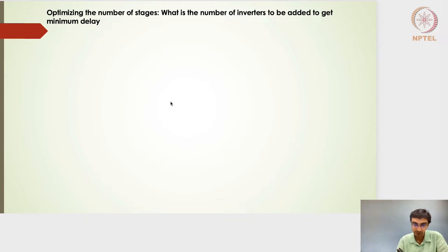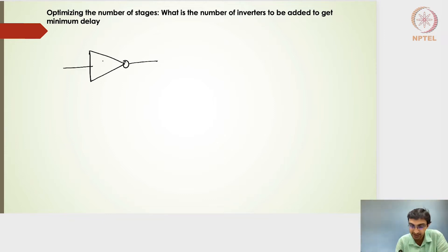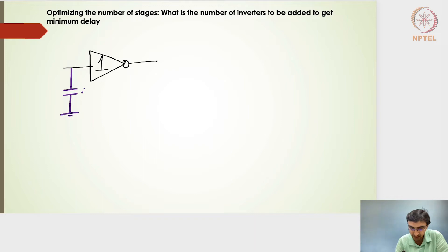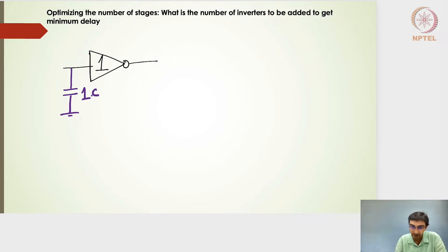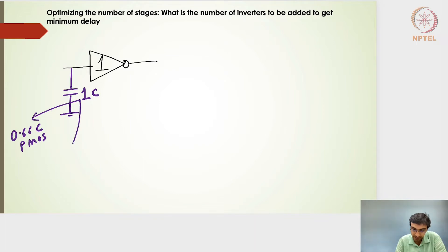Starting with one inverter, let's take an input size of one, meaning at the input of this inverter it sees a capacitance of 1C, including both the PMOS and NMOS transistors. Ideally, 2/3 C goes to the PMOS and 1/3 C to the NMOS, but for our theoretical understanding we will take a gate size of 1 for this inverter.